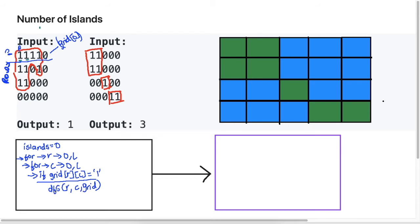When the DFS call returns — so if it starts here and visits all the neighbors — I know that that's my island. At this level I need to add that to my islands variable. The islands variable is just counting the number of islands, so it counts whenever the call returns. The last thing we need to do for this function is return the islands. We have our structure for the main function, and now we write the pseudocode for the DFS function.